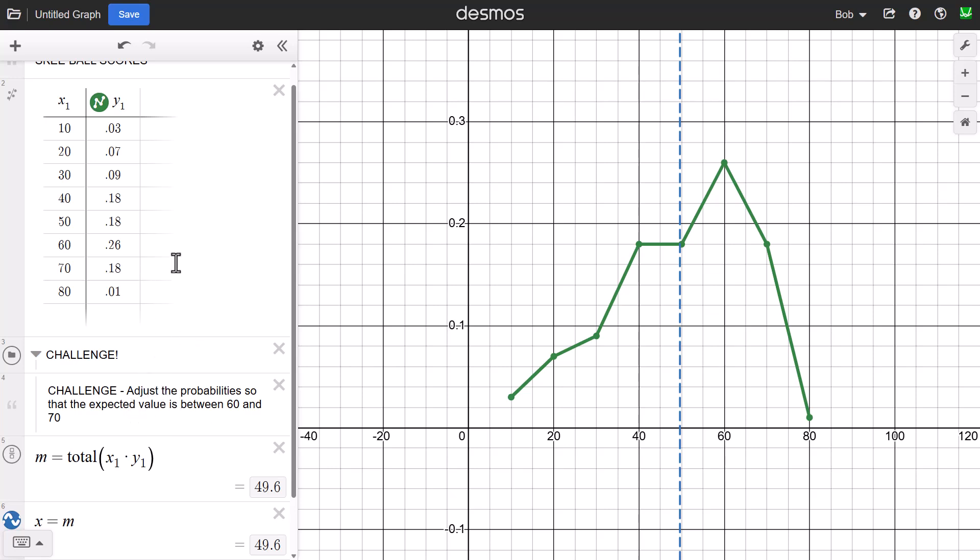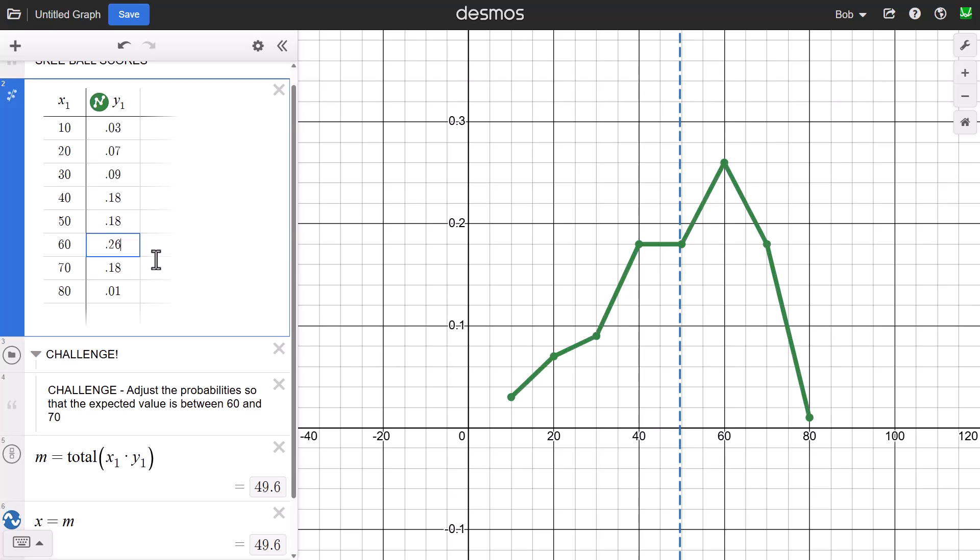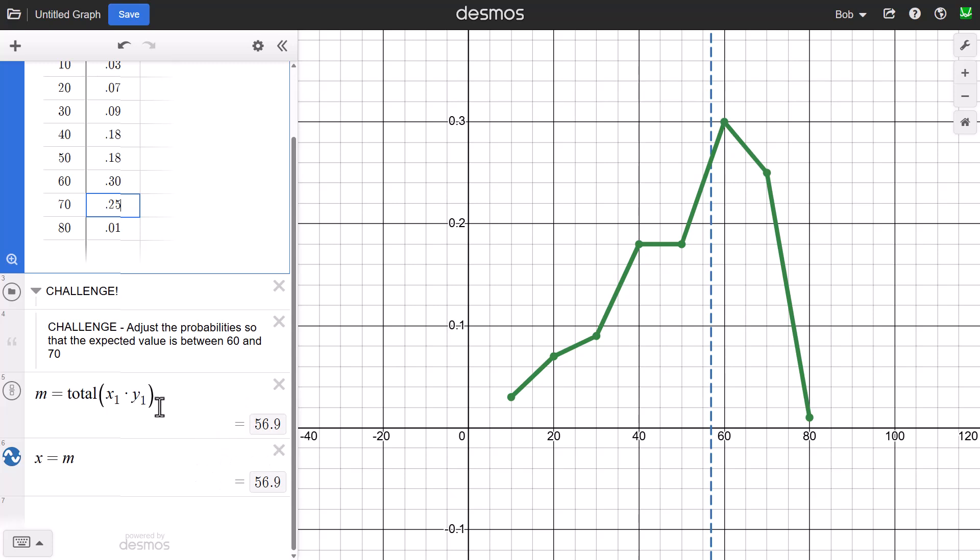So let's go ahead and do that. How do I play around with these? Students might figure out that the 60 and the 70 perhaps need to have a little bit higher probability. So I'm going to change this to 0.30, change the 70 to 0.25. And what do we have now? Notice that my mean is updating 56.9, but there's a problem. By changing these probabilities, I no longer have a valid probability model.